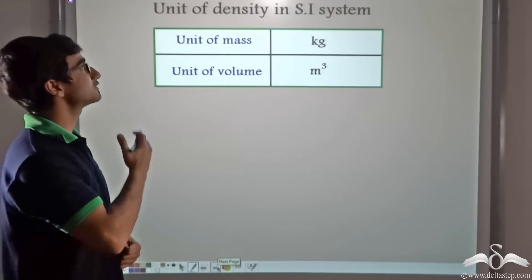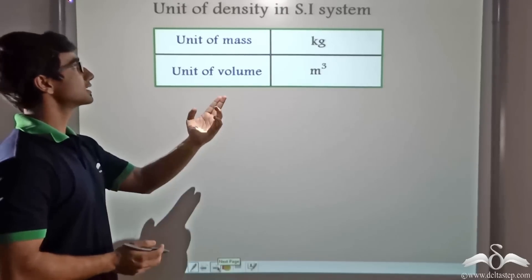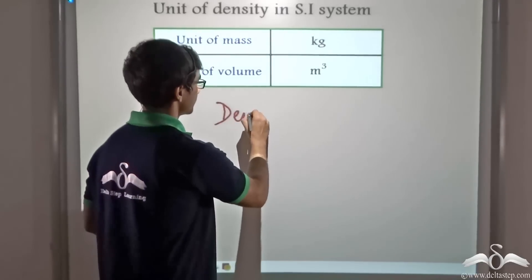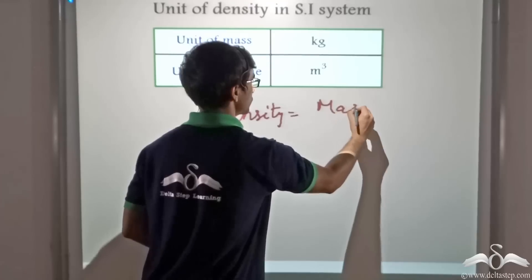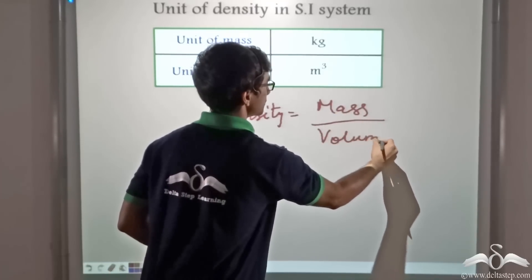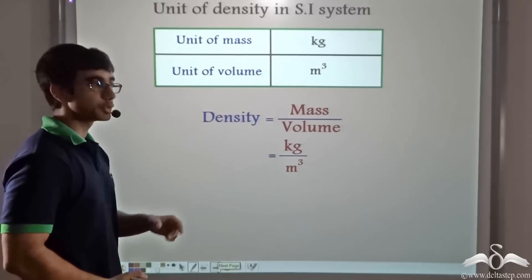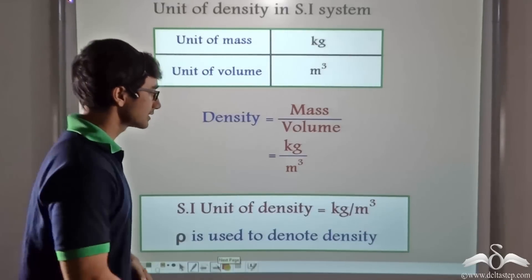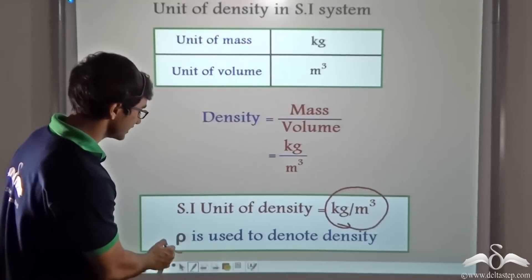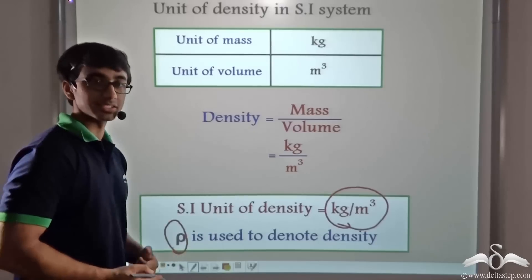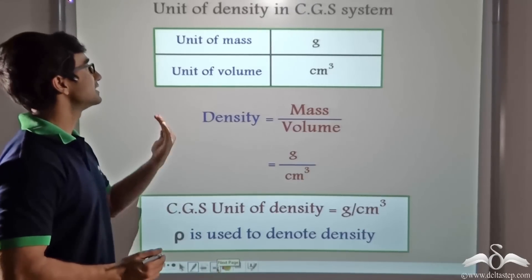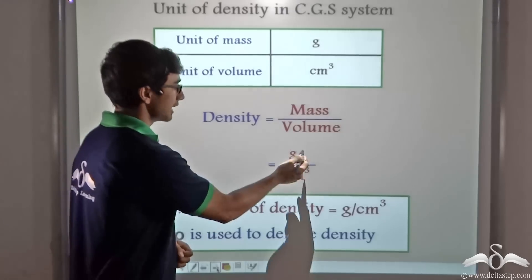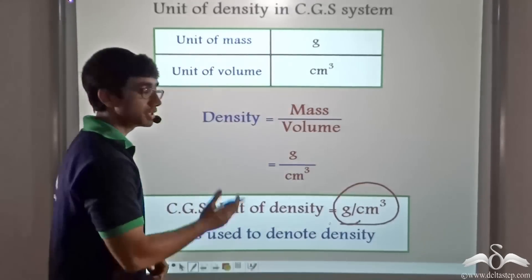So now let us find out what the unit of density is in the SI system. The unit of mass is kg and the unit of volume is meter cube. Density is nothing but mass per unit volume, which mathematically is given by mass upon volume. Thus in terms of units, density is represented as kg divided by meter cube — that is kg per meter cube. Rho, the Greek symbol, is used to denote density. Similarly, considering the CGS units for mass and volume — that is gram and centimeter cube — the CGS unit for density is gram per centimeter cube.